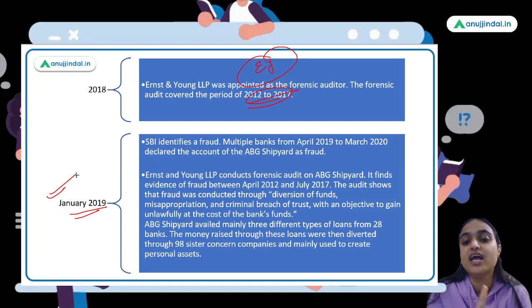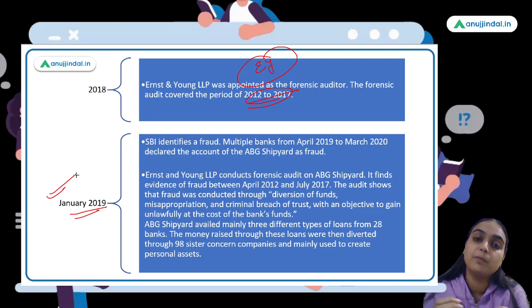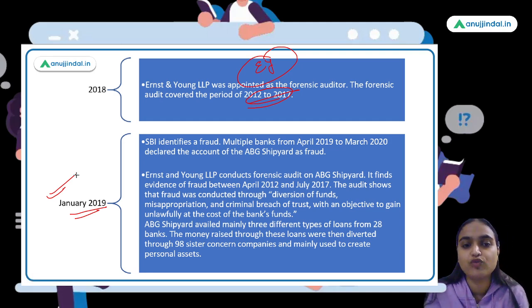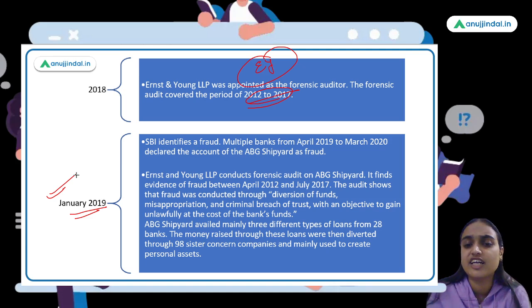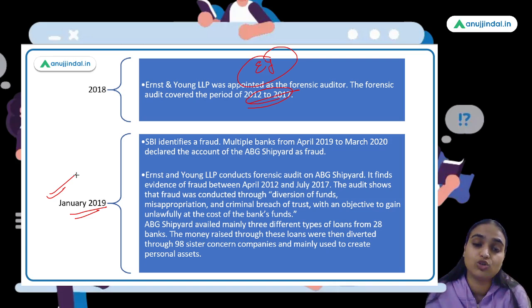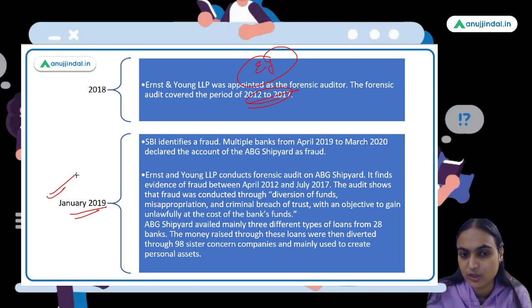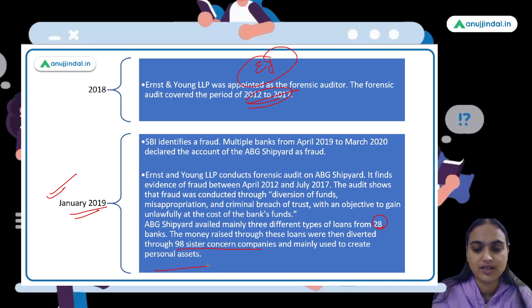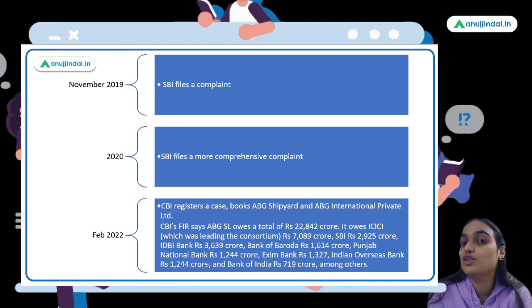The E&Y audit report mentioned that the company had diverted funds, misappropriated them, and unlawfully gained at the cost of bank funds. For the stated purpose of the loans, the company was actually diverting those funds elsewhere — making investments and building up its assets. Around 28 banks were involved from which loans were taken, and through around 98 companies they were trying to divert the funds.